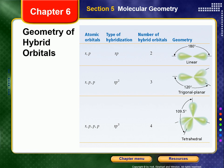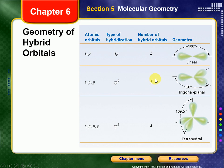If we hybridize only one s and one p orbital, we get sp hybridization producing two hybrid orbitals, giving two areas of electron density and a linear shape — like CO2 or beryllium difluoride. If we hybridize one s and two p's, that's sp2 hybridization producing three identical orbitals, giving three electron domains and a trigonal planar shape. If we take one s and three p's, we get sp3 hybrid orbitals — four of them — giving four electron domains and up to four bonds.